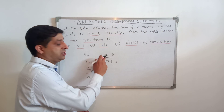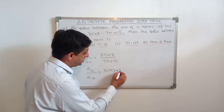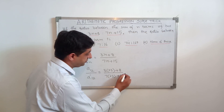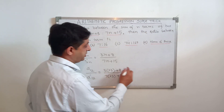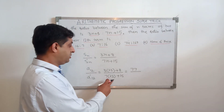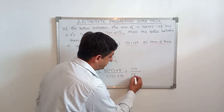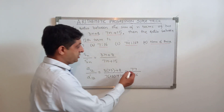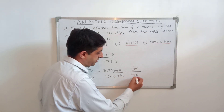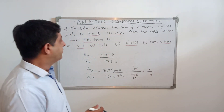Now put N = 23: (3 × 23 + 8) / (7 × 23 + 15). So 3 × 23 = 69, and 69 + 8 = 77. Then 7 × 23 = 161, and 161 + 15 = 176. Now cancel: 77 and 176 both divide by 11, giving 7 upon 16. Hence the ratio is 7 : 16, so option B is correct.